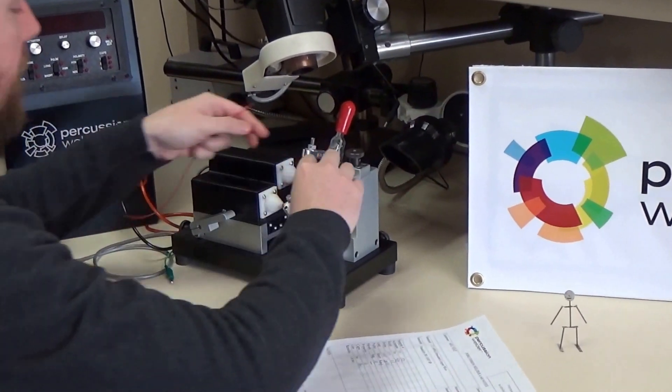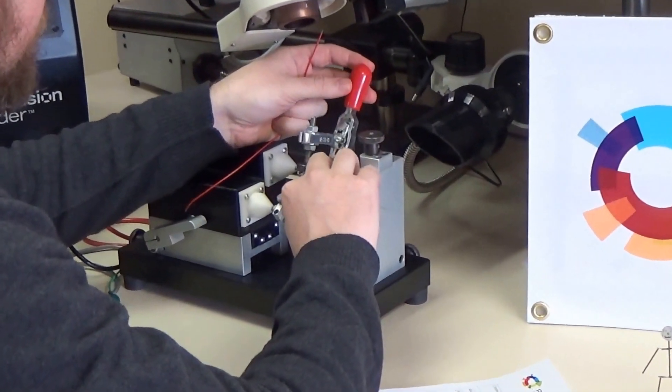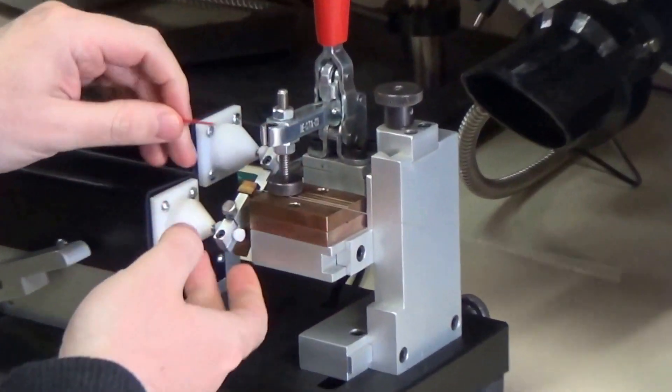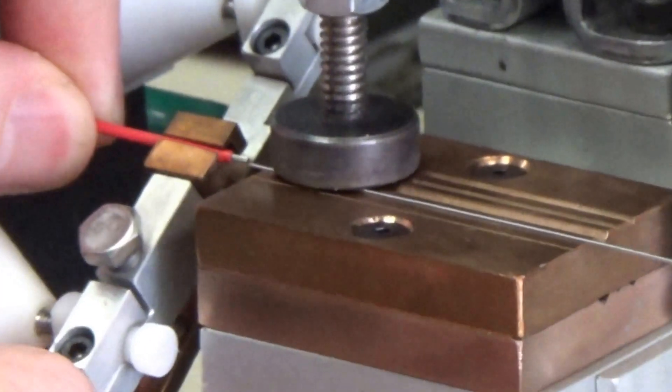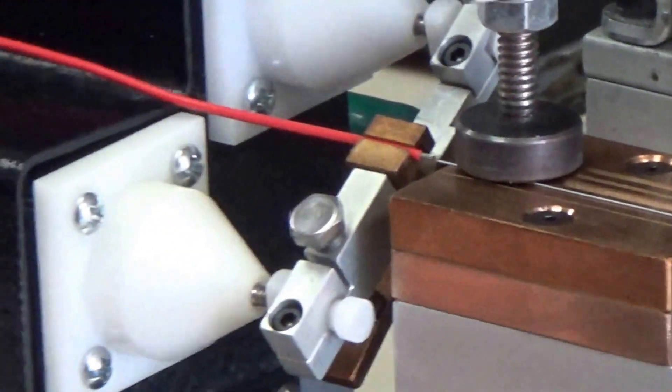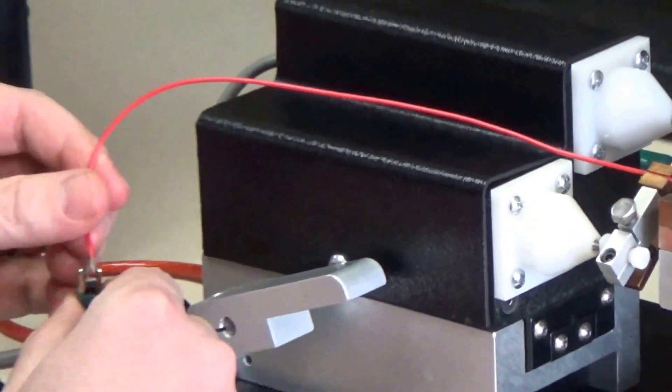First I'm going to load the Hastelloy wire into the stationary wire holder, the copper wire into the movable wire holder, and ground the copper wire because it's insulated.